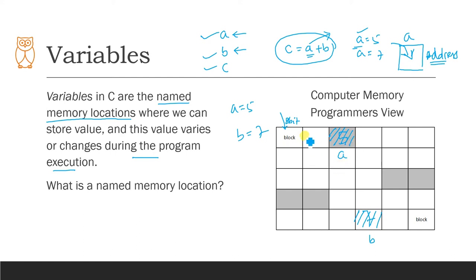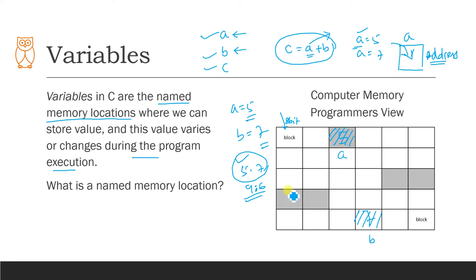A variable doesn't always occupy just one memory block — there may be multiple blocks, depending on the data type. For example, integer values like 5 or 7 have no decimal point, while float values like 5.7 or 9.6 have a decimal point and require more storage — possibly two blocks. Depending on the type of value used in your program, the compiler allocates the appropriate amount of space. So a variable is a named memory location where data is stored and continuously changes.